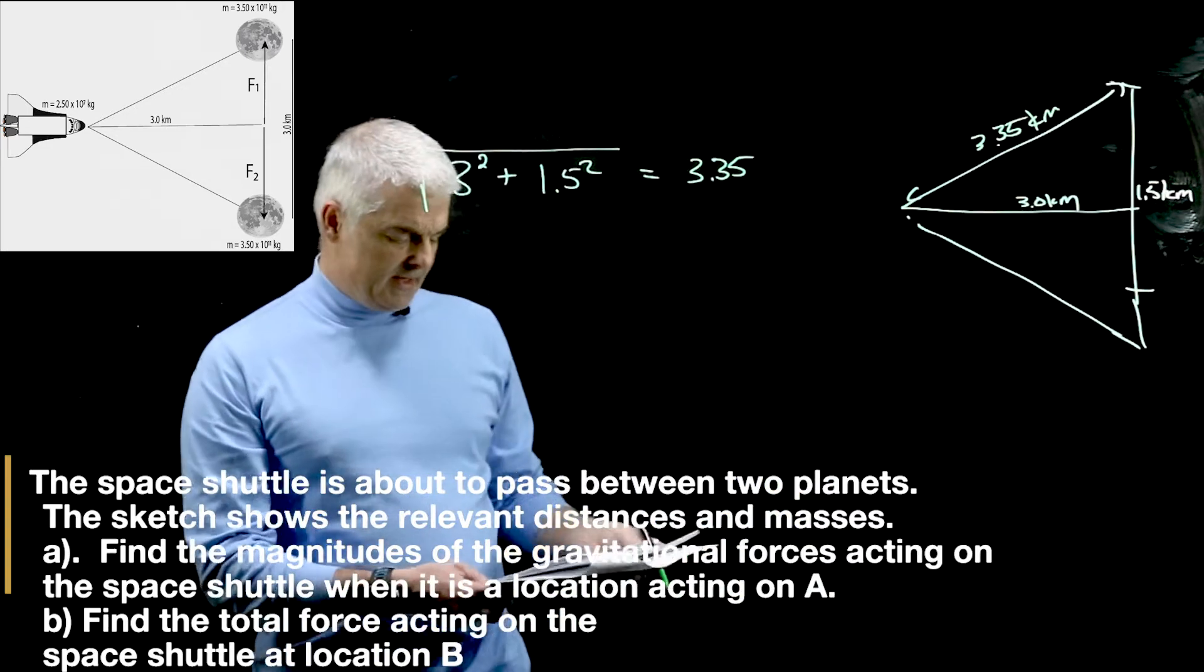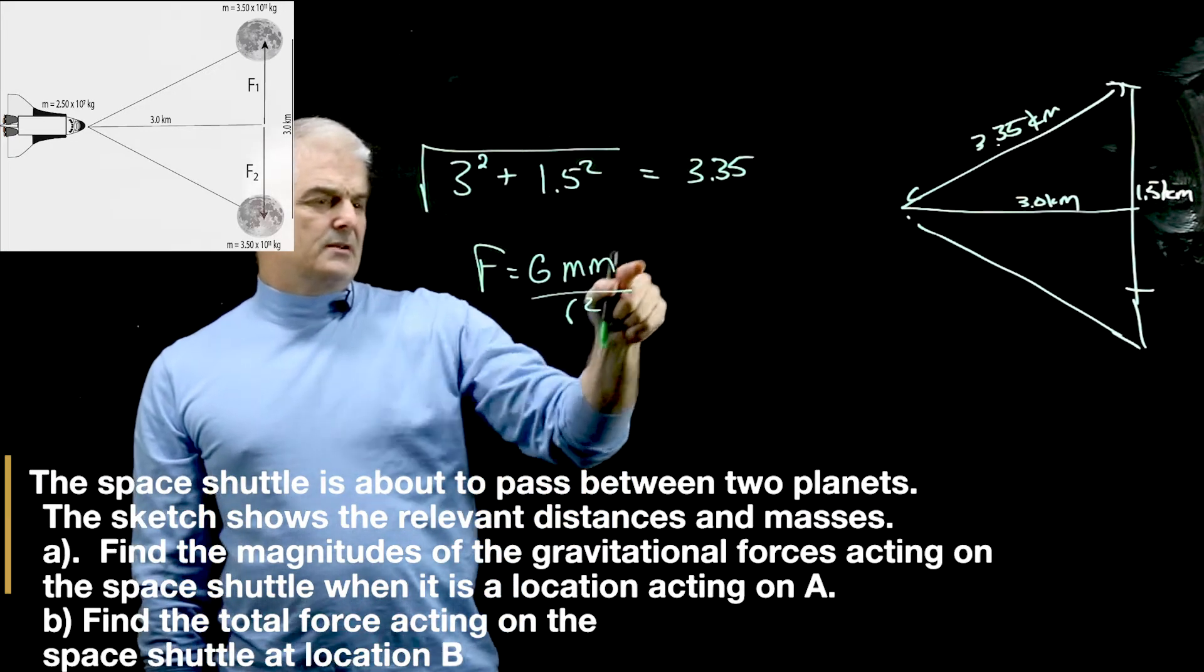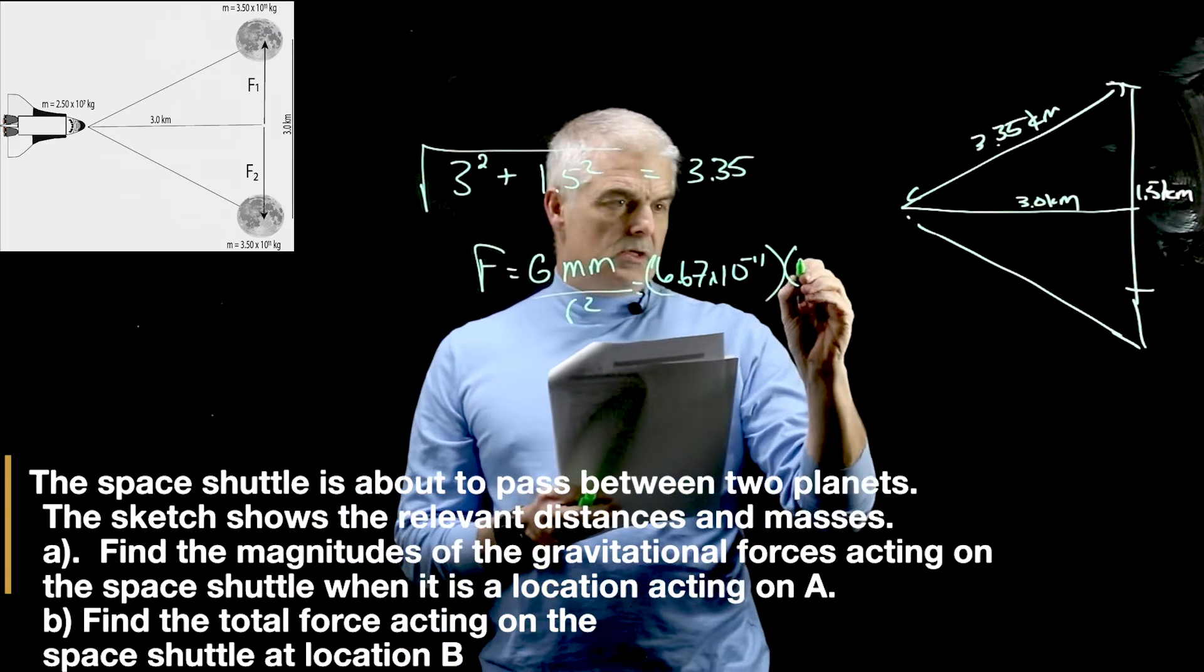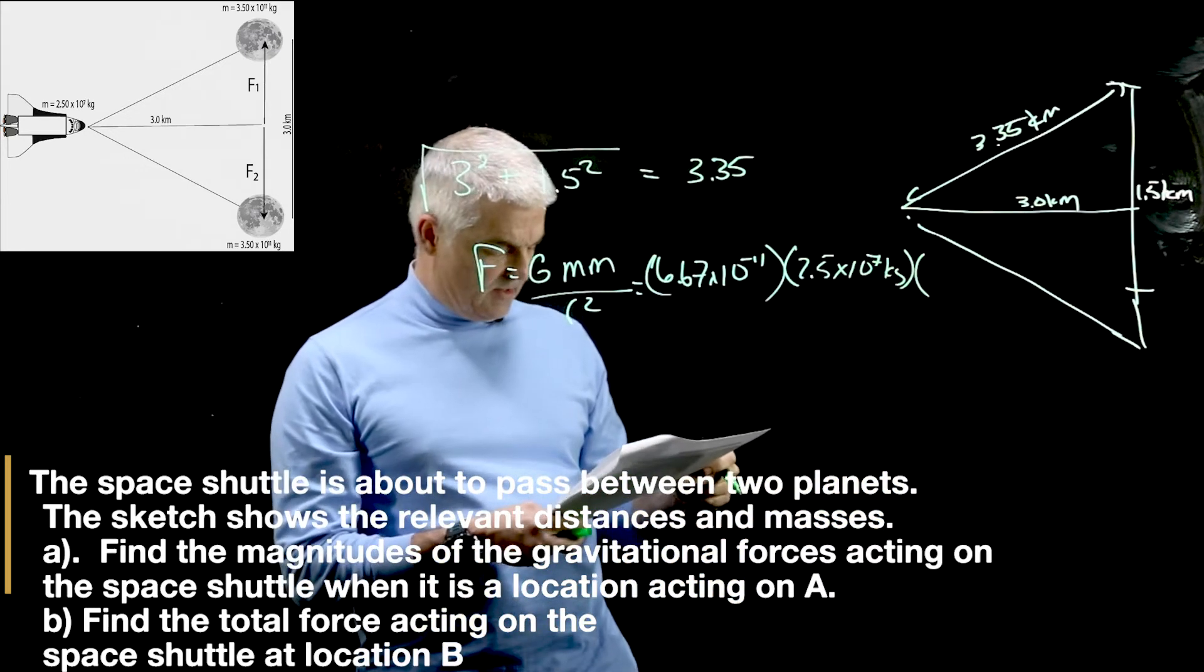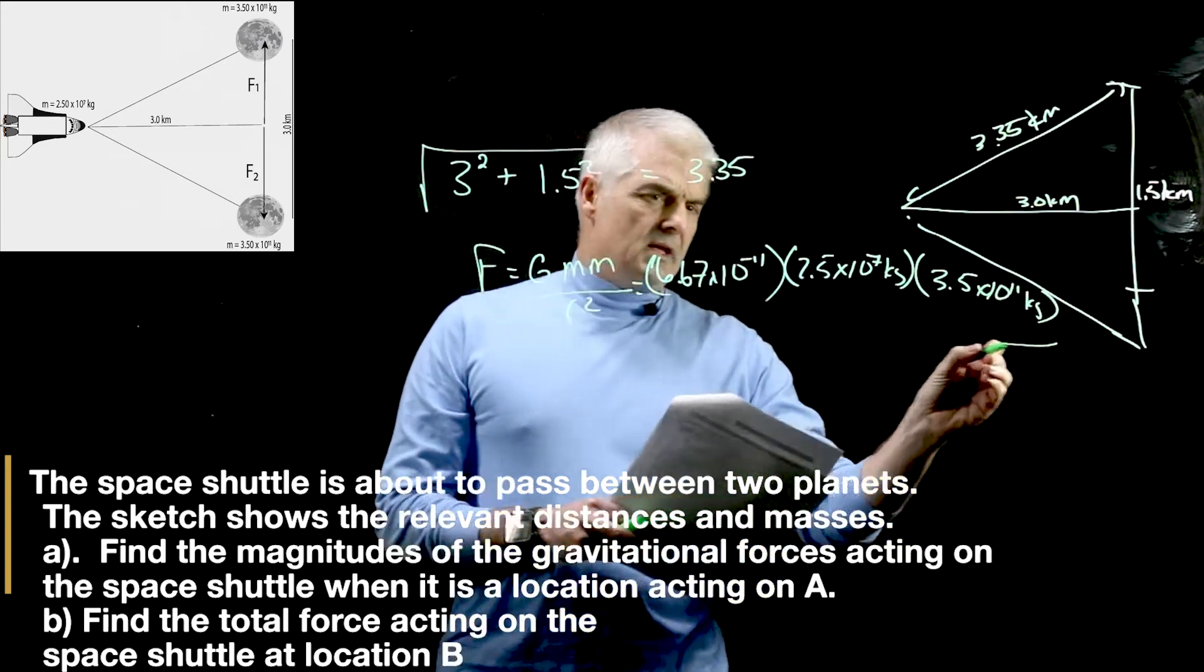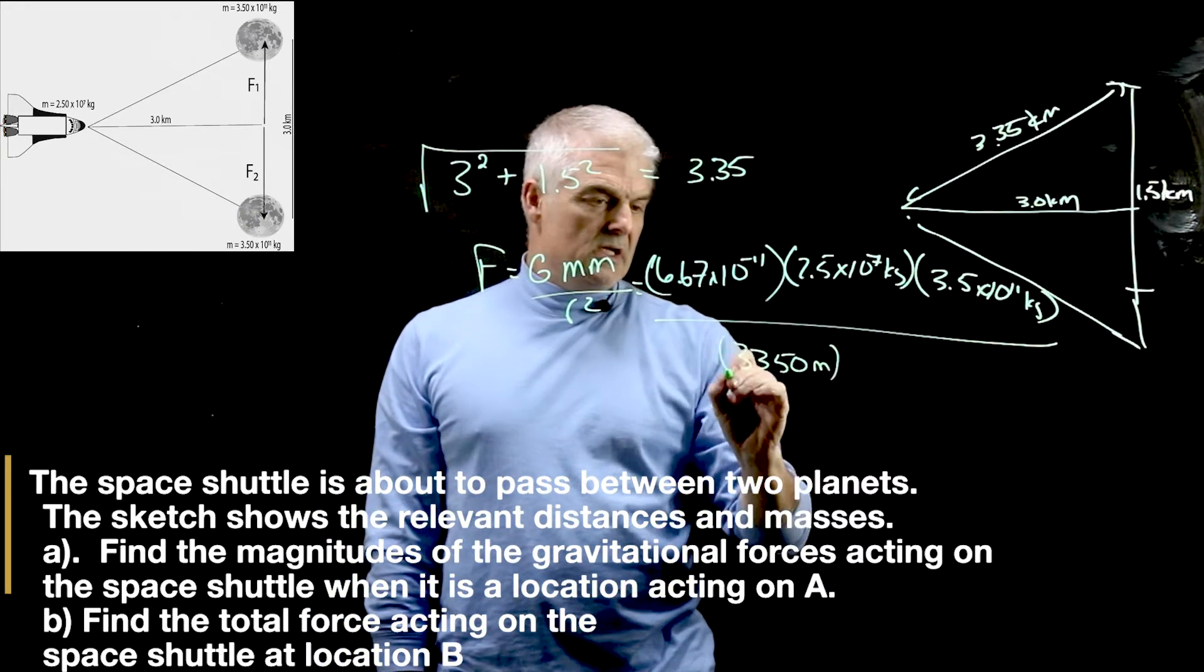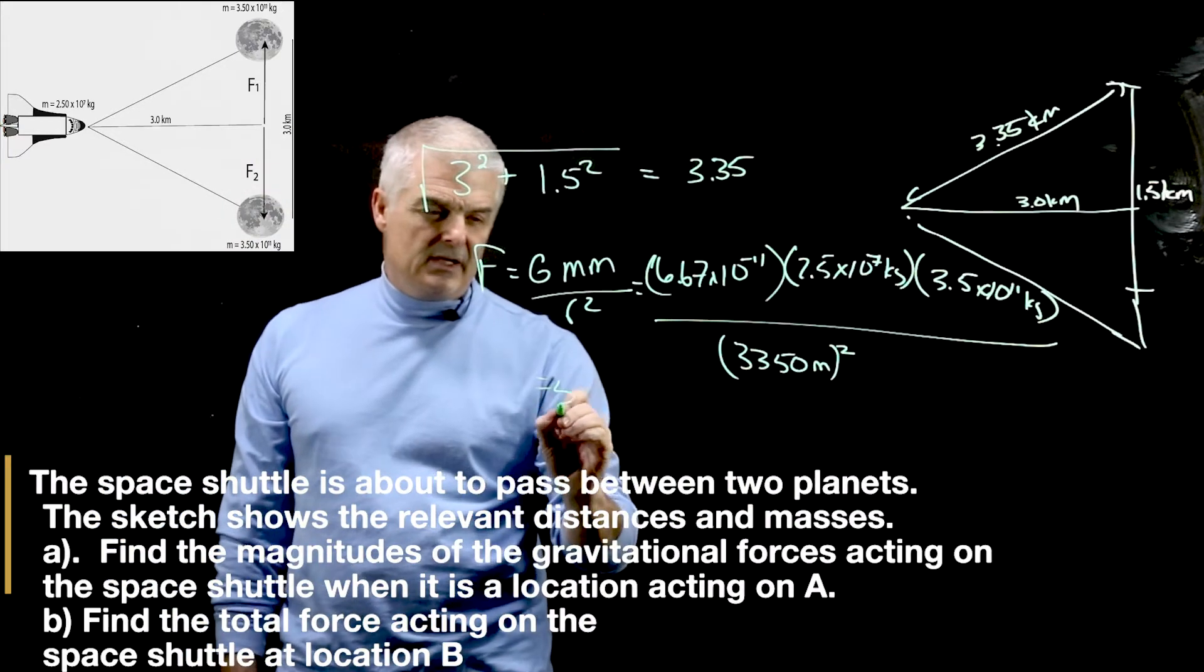Why is that important? Because I need to find the radius, because we're going to plug this into the equation: F equals GMM over R squared. And we needed this number to plug in here. So now I plug in my numbers: 6.67 times 10 to the minus 11th times the mass of the space shuttle, 2.5 times 10 to the seventh kilograms, times the mass of the planets, 3.5 times 10 to the 11th kilograms, divided by R squared. Now R is 3.35 kilometers, but we have to put that in meters. So that's 3350 meters squared. Get your calculator and you come up with 52 newtons.